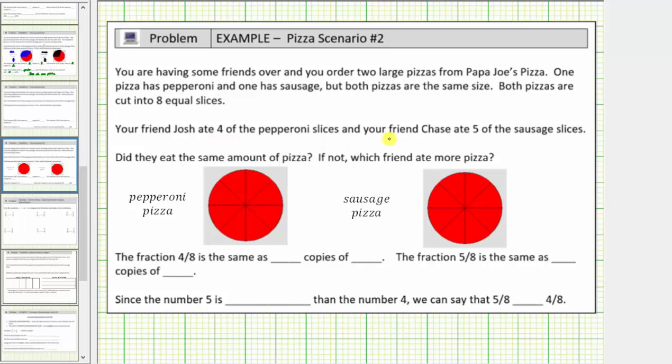Josh ate four of the pepperoni slices. Let's just say Josh ate these four slices. Notice Josh ate four-eighths of the pizza, which you may recognize is equal to one-half.